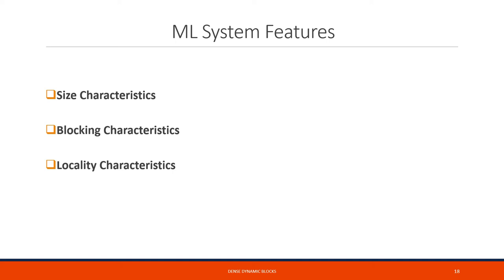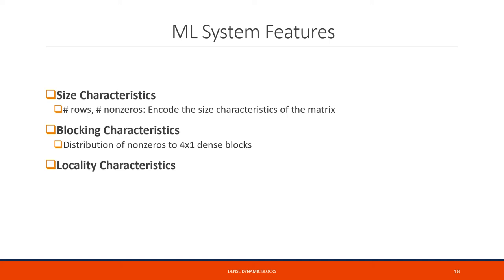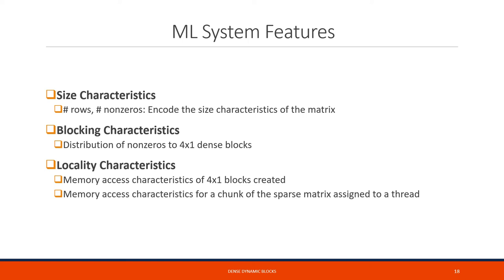The second component of the SPMM optimizer is the feature set used as inputs to our machine learning models, categorized under three groups: size, blocking, and locality characteristics. Size characteristics consider simple properties such as number of rows and number of non-zeros. Blocking characteristics consider the distribution of non-zeros to 4x1 blocks, as done when calculating AFT. Locality characteristics create features analyzing memory access behavior of 4x1 blocks and memory access characteristics for portions of the sparse matrix assigned to a single thread. These features give insights into work amount, MMA effectiveness, and slicing effectiveness respectively.